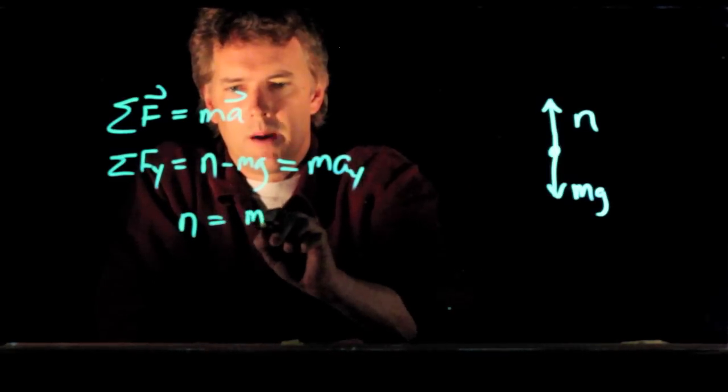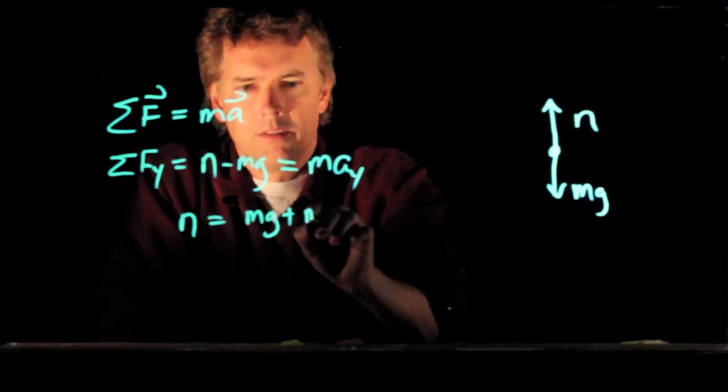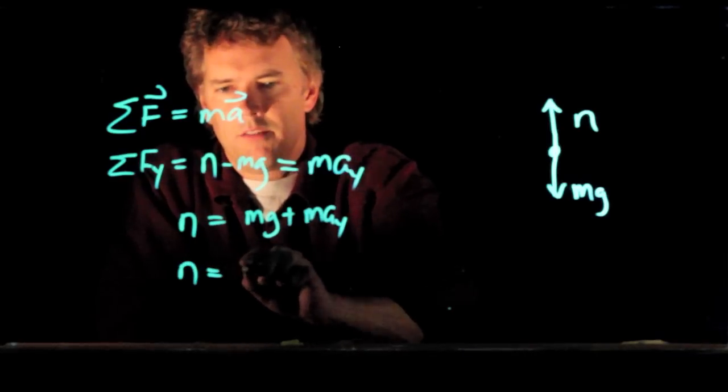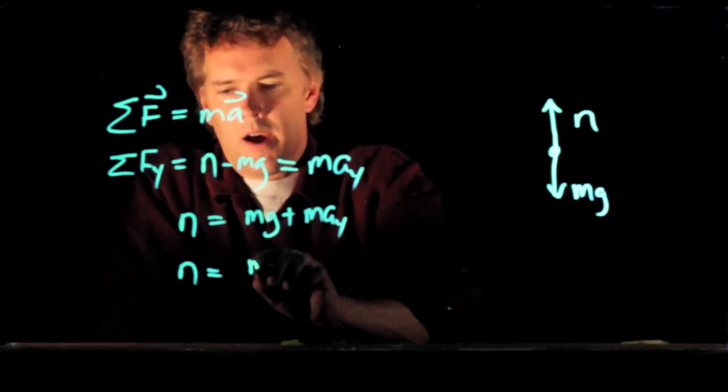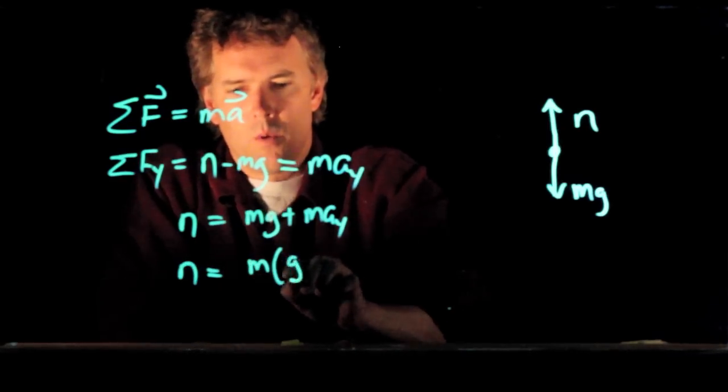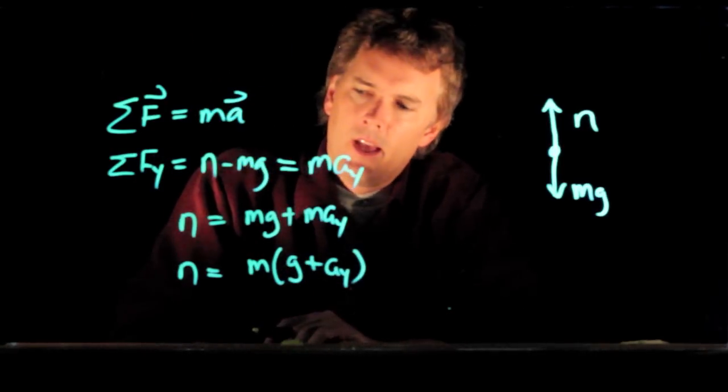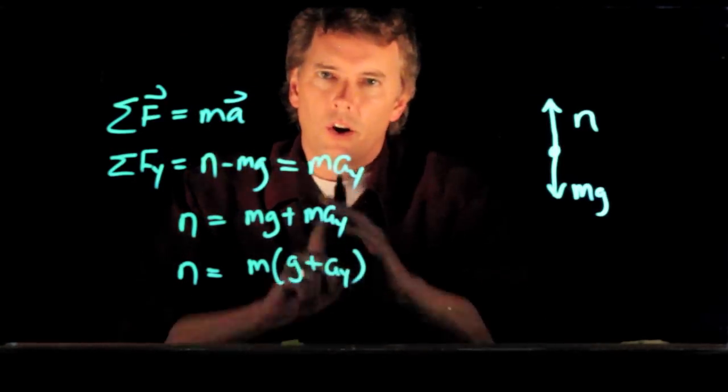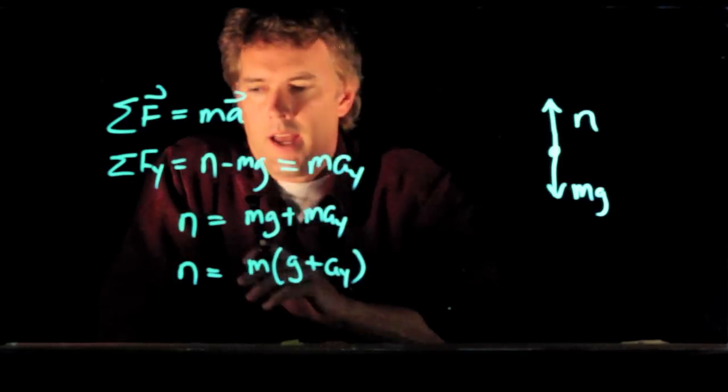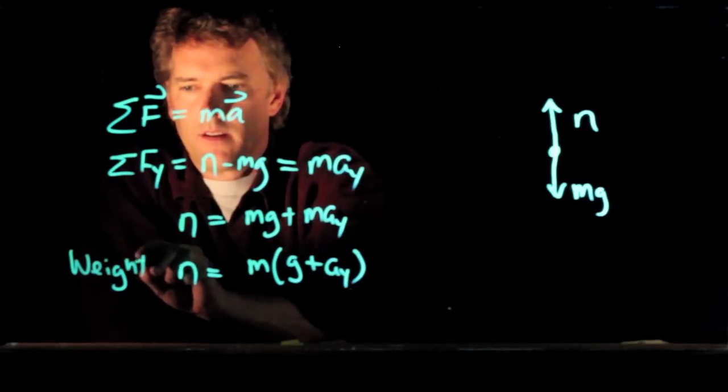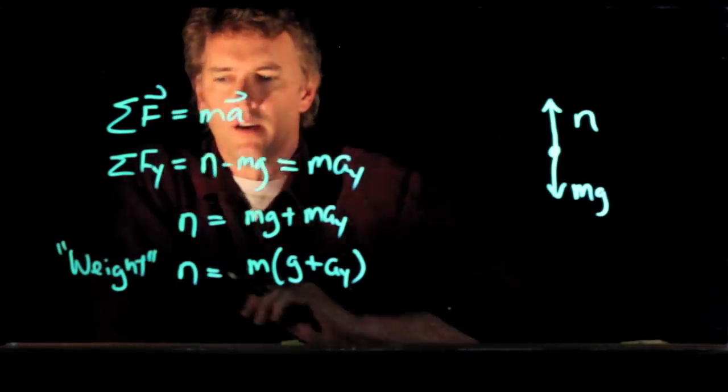N is just equal to MG plus MAY. Or N is equal to M times the quantity G plus AY. This N is how hard the scale is pushing up on you. And so this is, in fact, what we call weight.